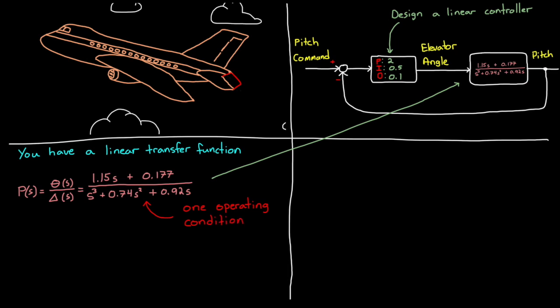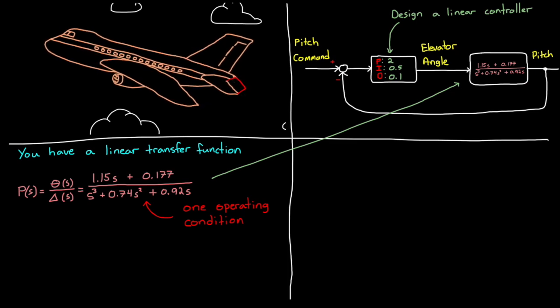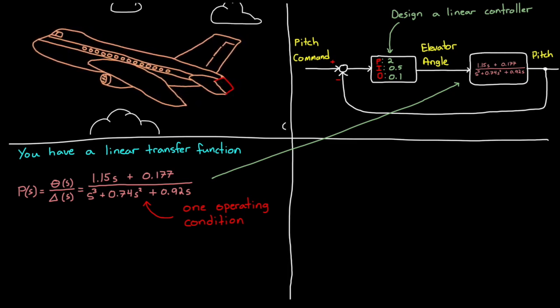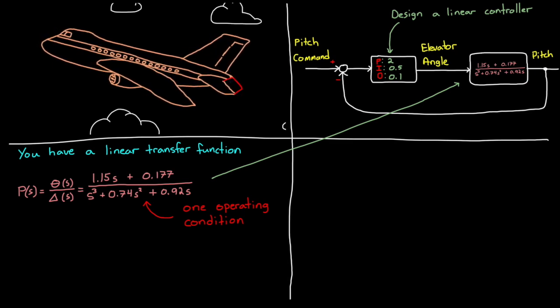But planes don't fly just in a single operating condition. The Mach number changes, dynamic pressure, flap positions, the center of gravity and mass changes as fuel is consumed, and the angle of attack changes, and so on. The operating conditions are always changing, and each operating condition has its own set of parameters, and therefore a different instance of the linear model.